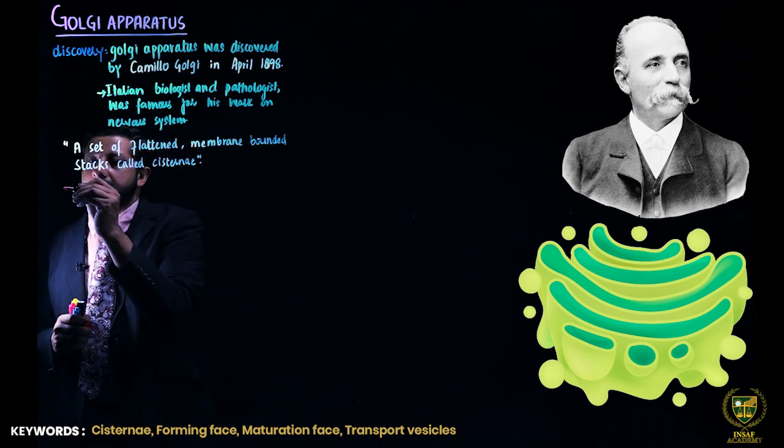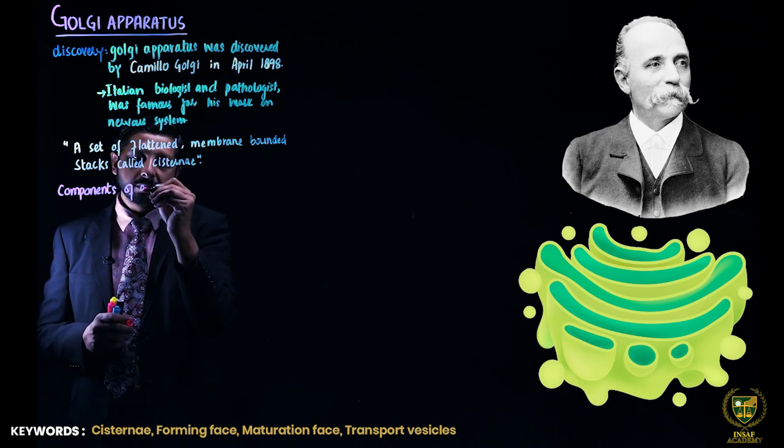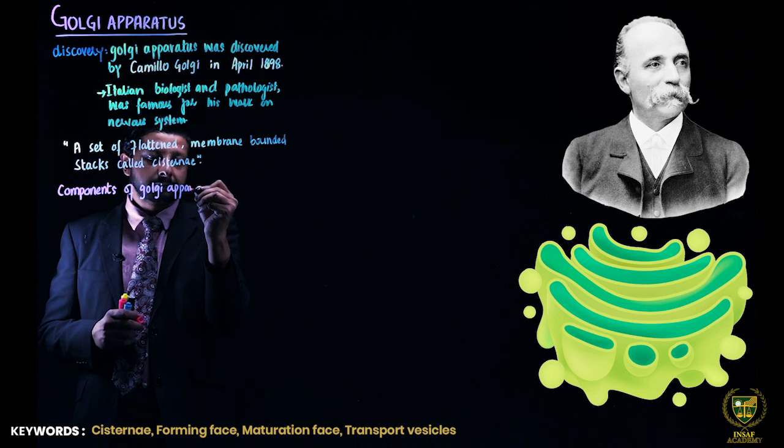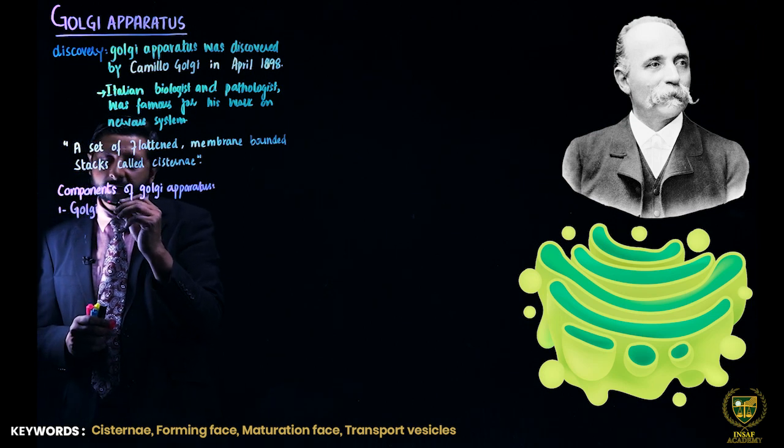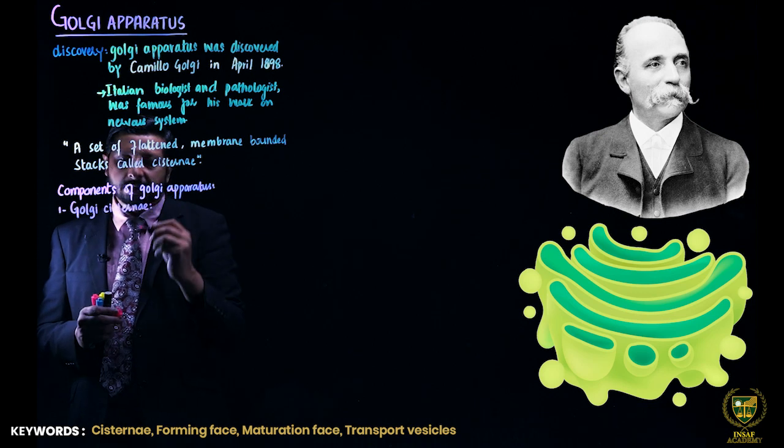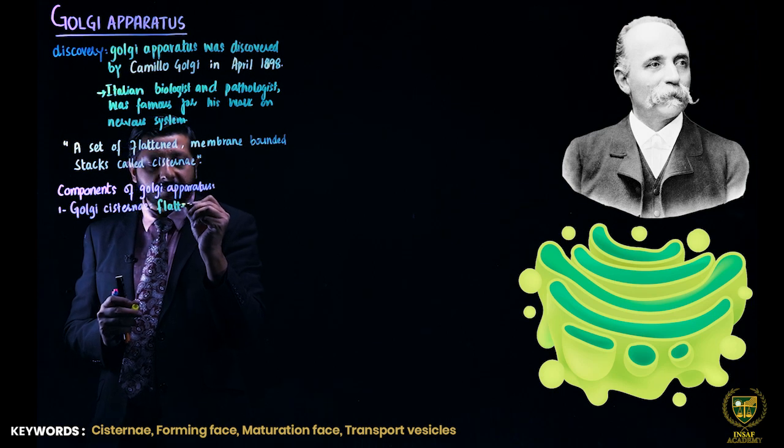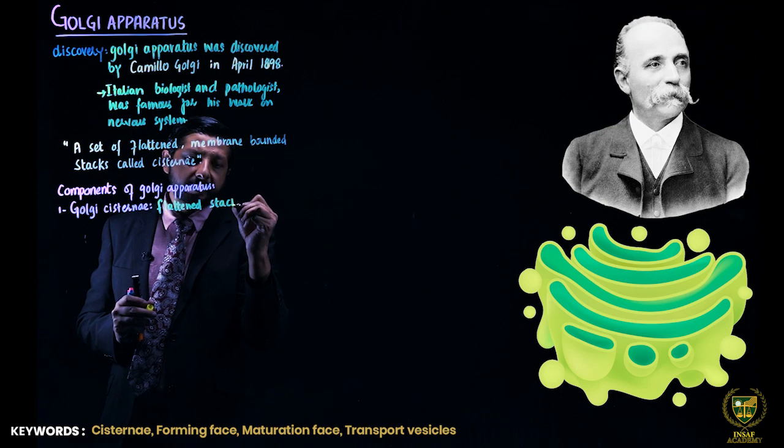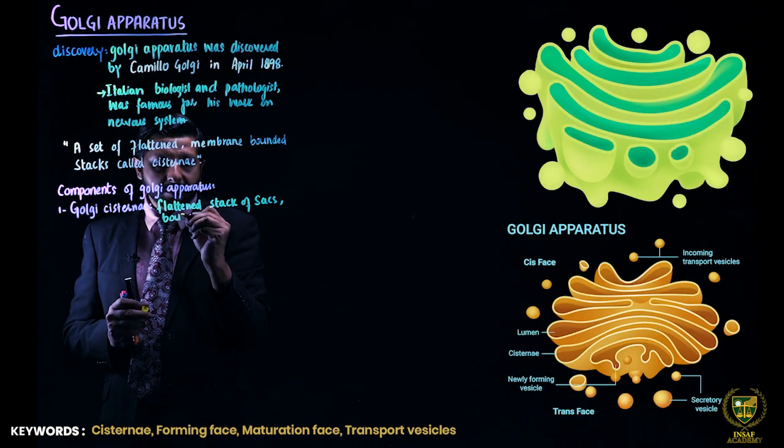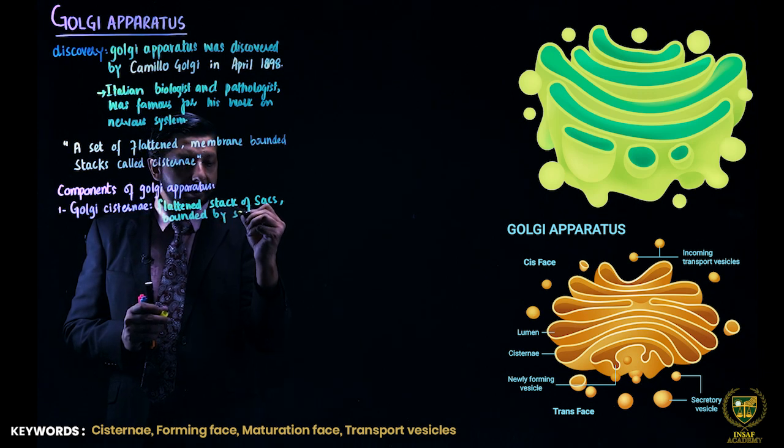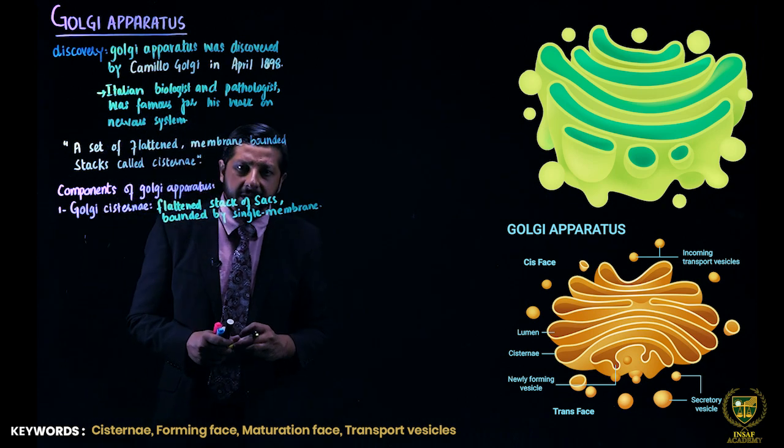Now, its components. There are two major components. Number one, the Golgi cisterna. These are flattened stacks of sacks bounded by single membrane. As we discussed in previous lectures, Golgi apparatus is a single membrane-bounded organelle.